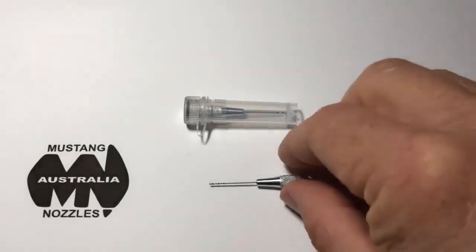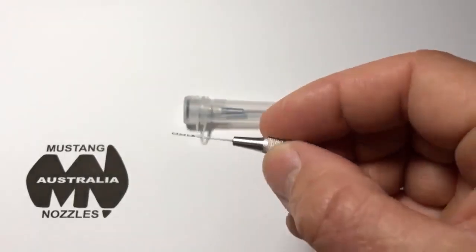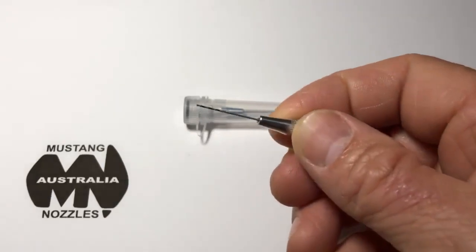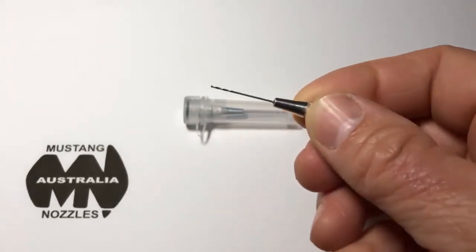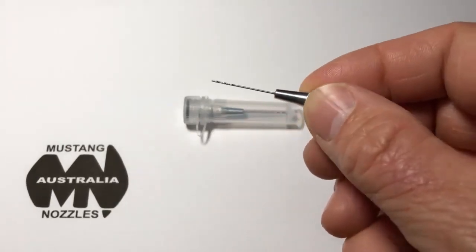This is the tip cleaner. It's got a little thimble on the side of the back here and a 0.6 millimeter hard steel drill bit.